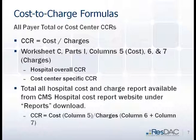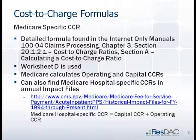The formula for calculating the all-payer total cost-to-charge ratio is cost over charges, found on Worksheet C, Part 1, Columns 5, 6, and 7. For the Medicare-specific cost-to-charge ratio, it is found within the claims processing manuals — Chapter 3 has a specific section detailing exactly which variables are used. It would be found on Worksheet D, and you can also get it out of the payment impact file, where both capital and operating cost-to-charge ratios are provided.